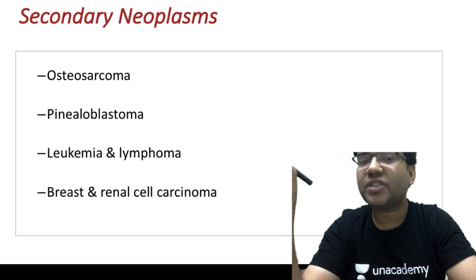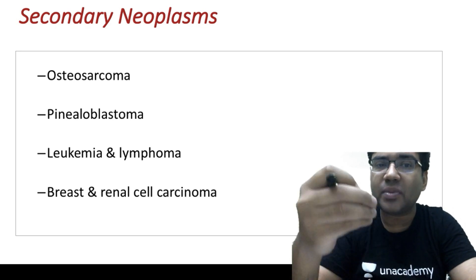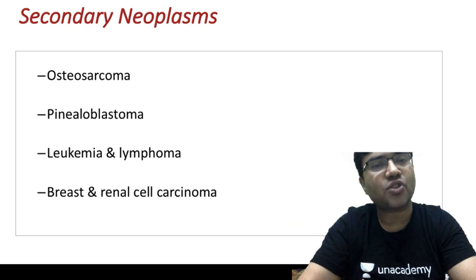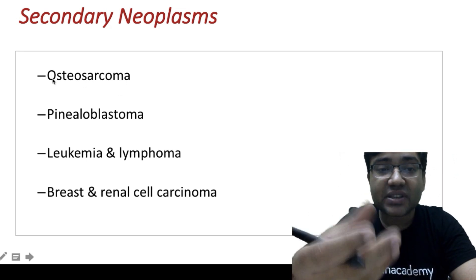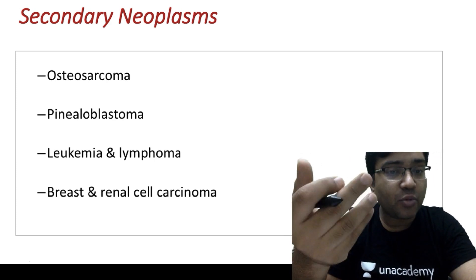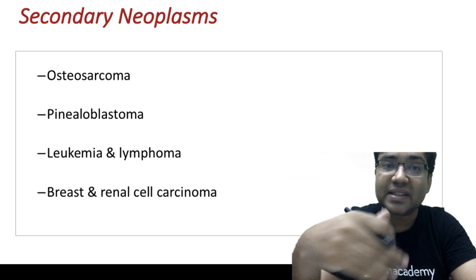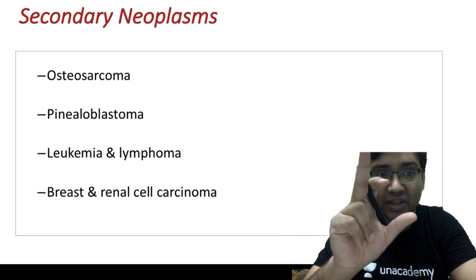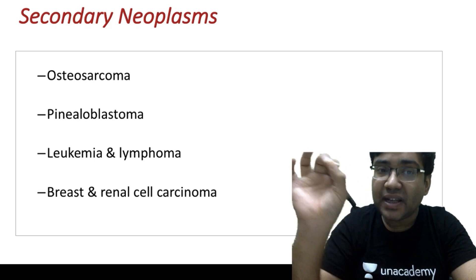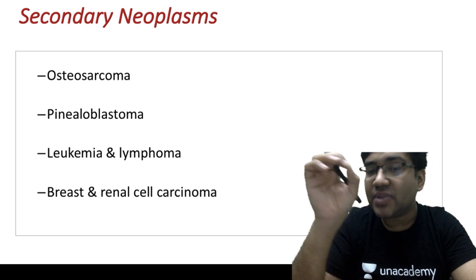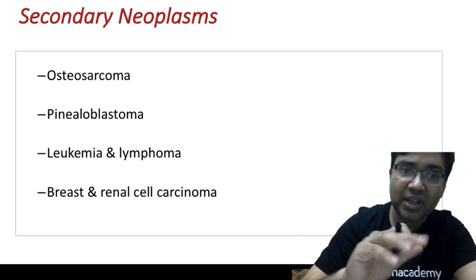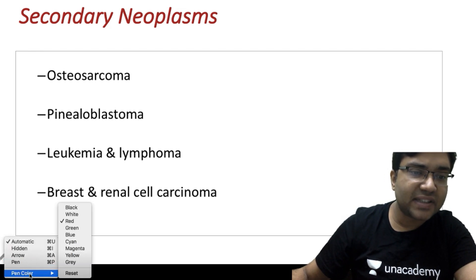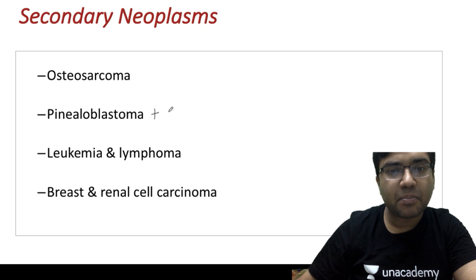The most common secondary neoplasm in retinoblastoma patients is osteosarcoma. Other secondary malignancies include pinealoblastoma, leukemia, lymphoma, breast, and renal cell carcinomas. Regarding trilateral retinoblastoma — remember it is pinealoblastoma plus bilateral retinoblastoma. This is called trilateral retinoblastoma and was a previous year exam question.